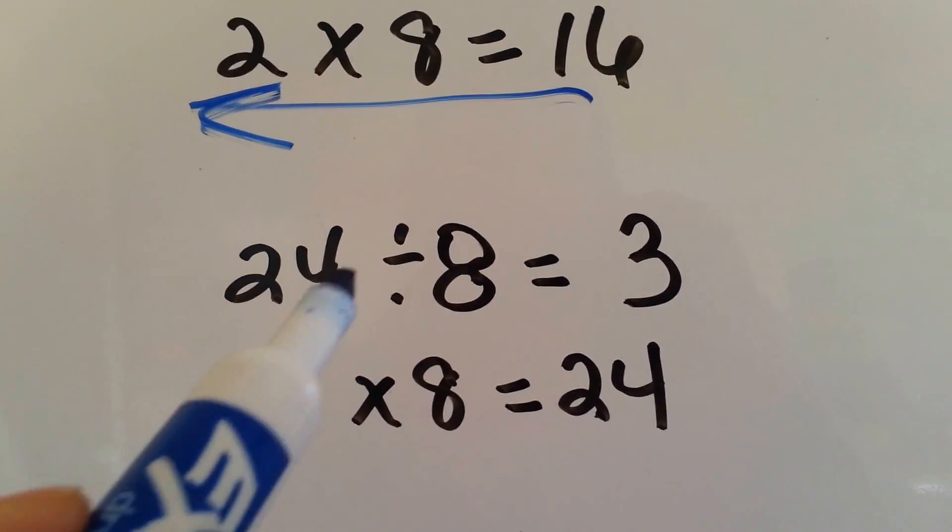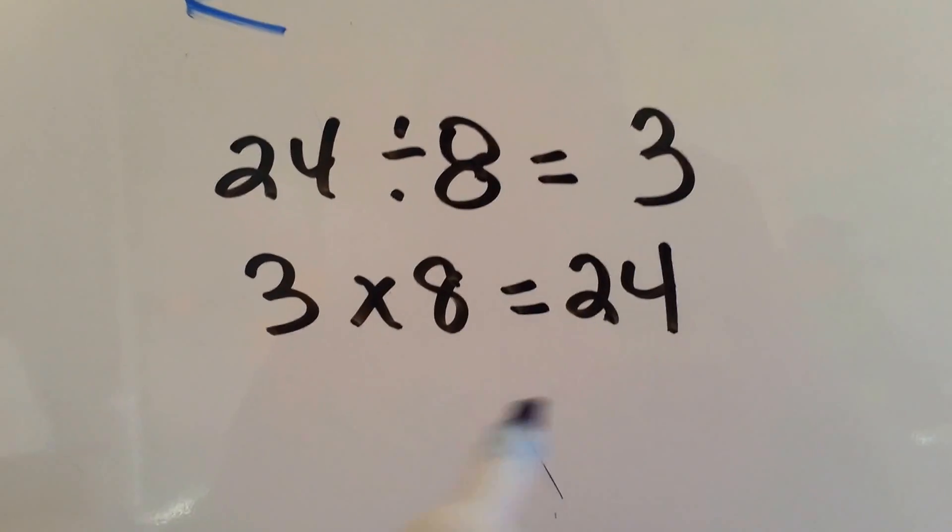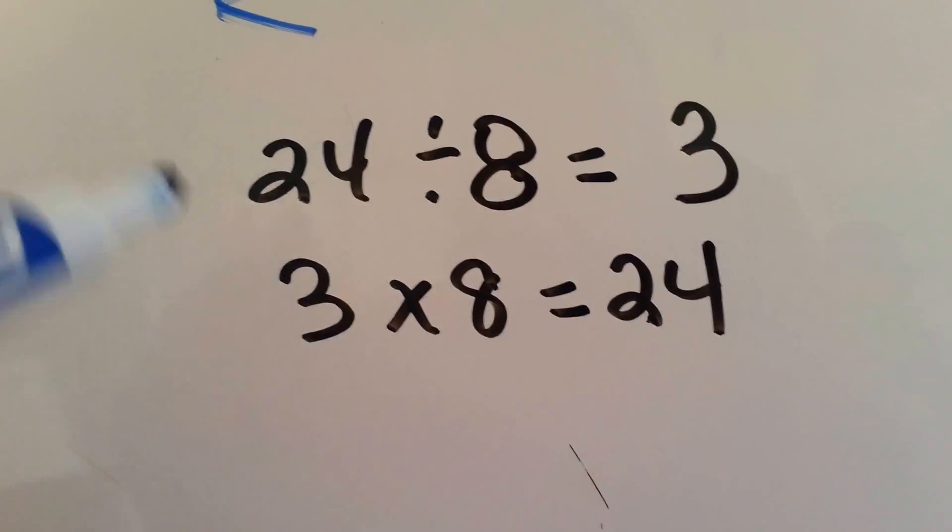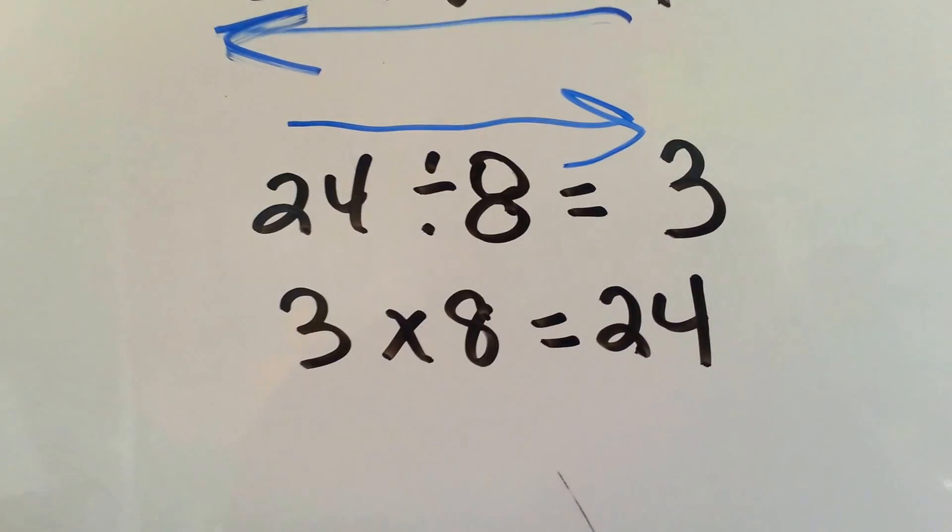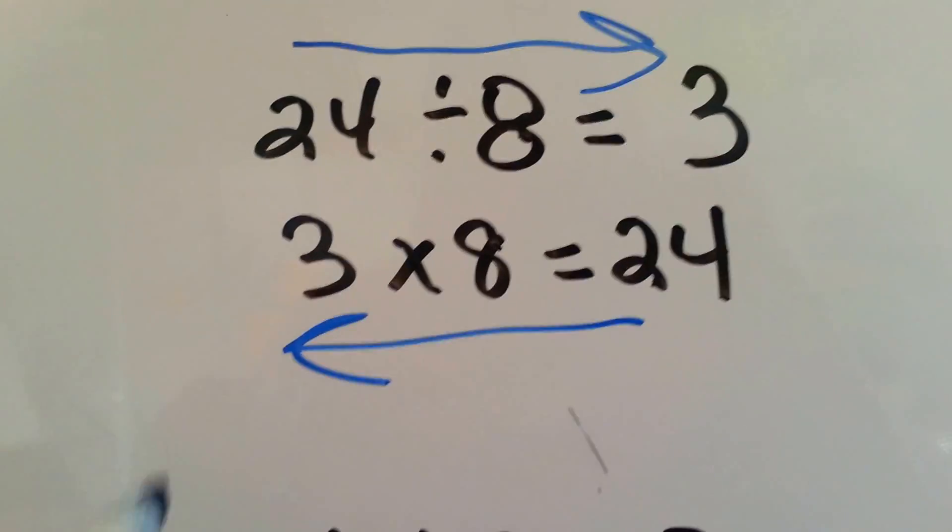24 divided by 8 equals 3. 3 times 8 equals 24. It goes this way, and then it goes that way.